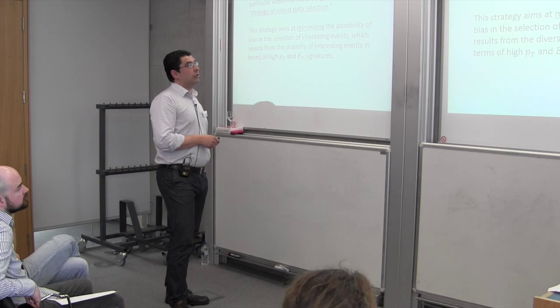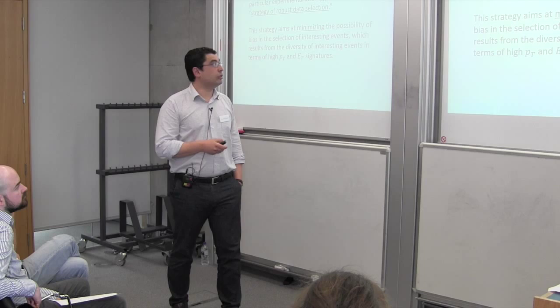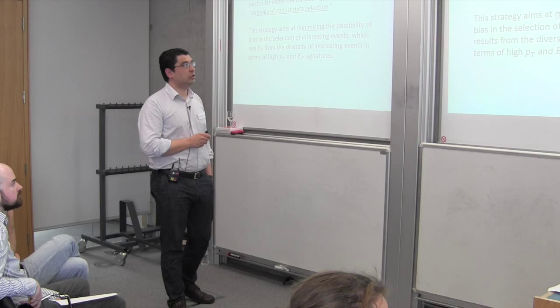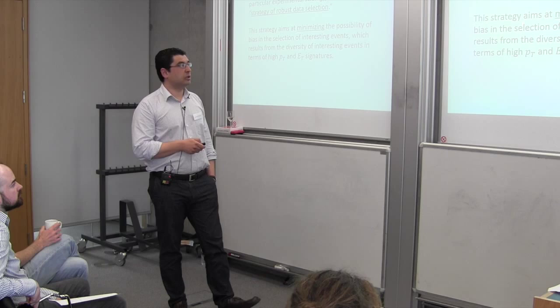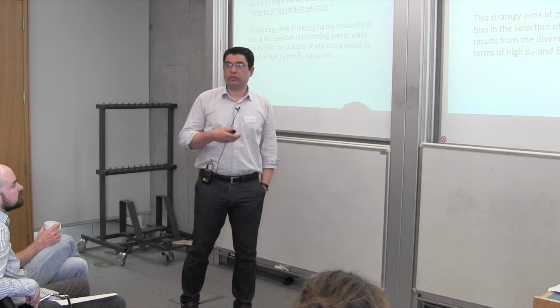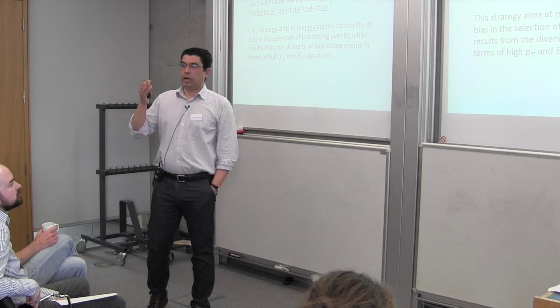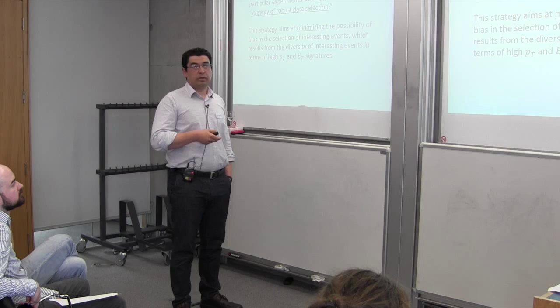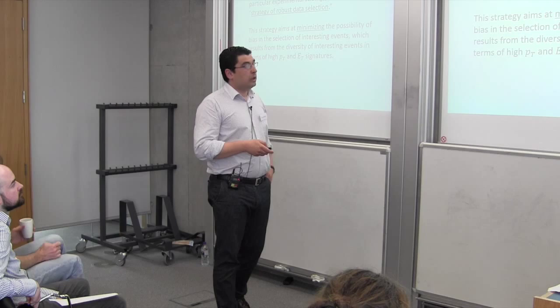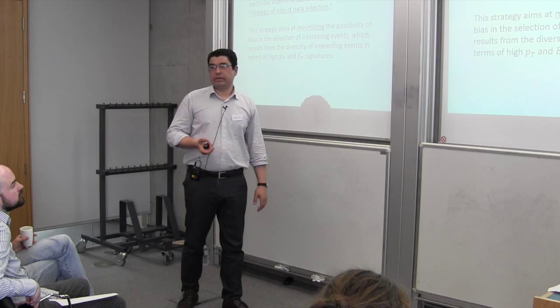I will argue that the selection of interesting events is performed according to a particular experimental strategy, which I call the strategy of robust data selection. The aim is to minimize the possibility of bias in the selection of interesting events. This bias might result from the diversity of interesting events in terms of high-PT and ET signatures. Because we have a continuum of different types of interesting events, we can only minimize — not eliminate — the possibility of bias.